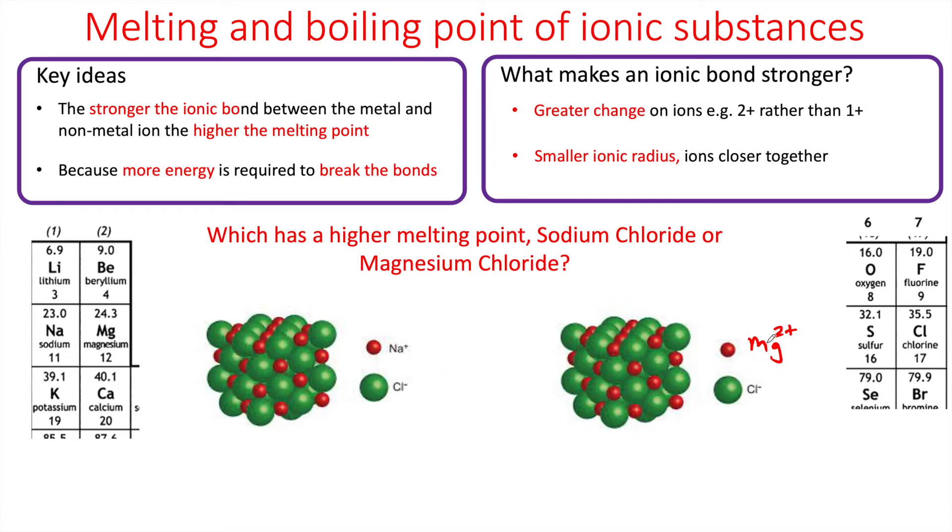There's no difference in ionic radius for the chlorine, but you'll notice magnesium has a 2+ ion. Therefore there's a greater electrostatic attraction and therefore a stronger ionic bond between magnesium and chlorine, so that has the higher melting point because more energy is needed to break the bonds.